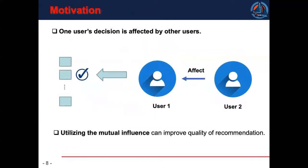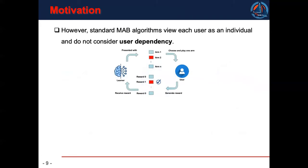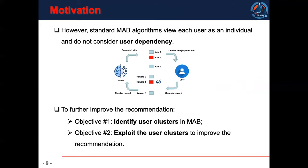Our work is motivated by the fact that one user's decision is affected by other users. So if we can utilize the mutual influence among users, we can improve the quality of recommendation. However, standard MAB algorithms view each user as an individual and do not consider user dependency. Therefore, to further improve the recommendation, our first goal is to identify user clusters in multi-arm bandit, and the second goal is to exploit the user clusters to improve the quality of recommendation.